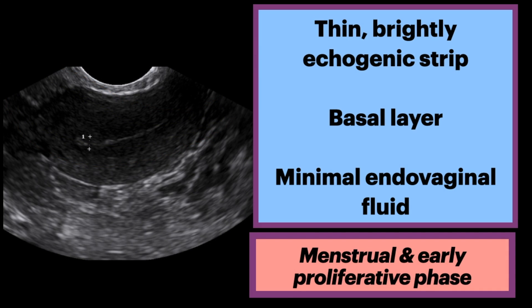Let's see how the endometrial stripe changes with the menstrual phase. In the menstrual and early proliferative phase, it is a thin, brightly echogenic stripe comprising the basal layer. Minimal fluid can be seen endovaginally within the endometrium in the menstrual phase.